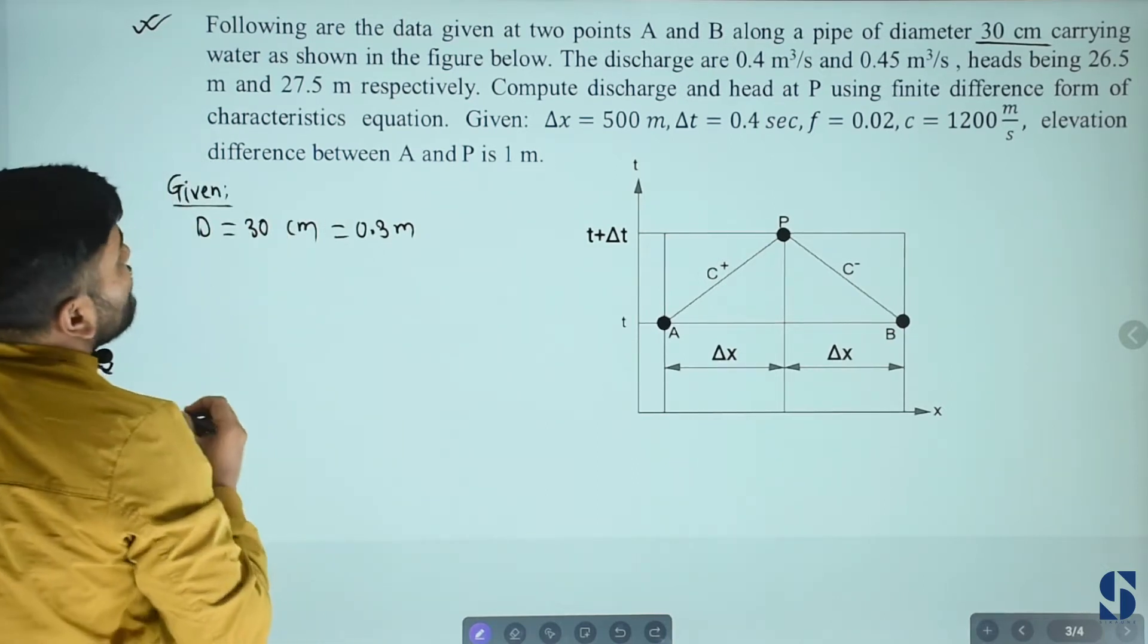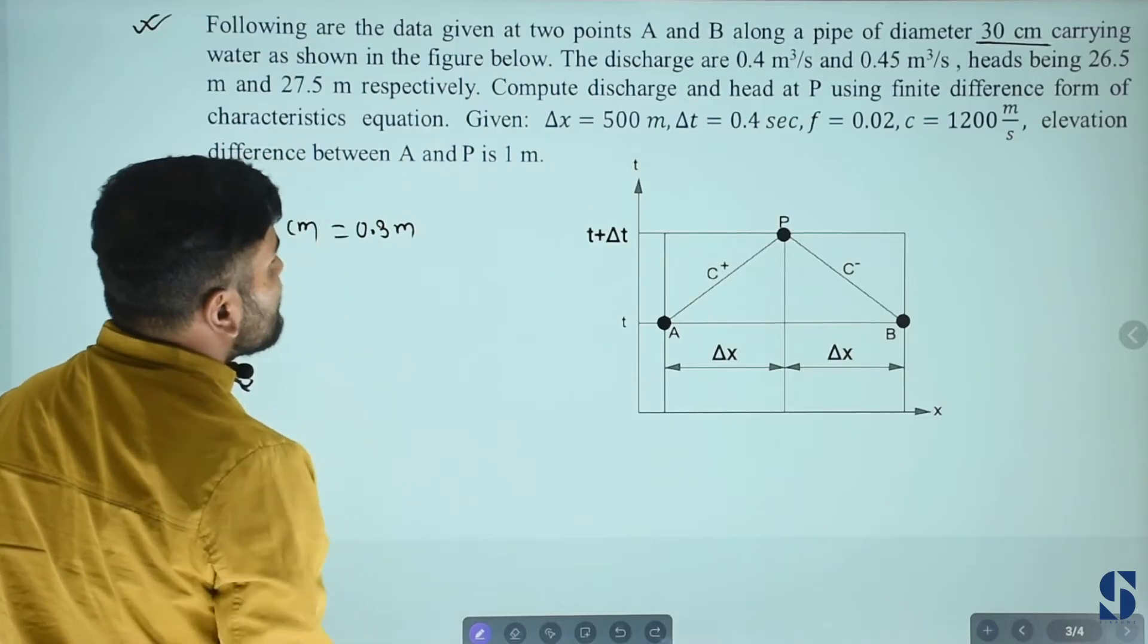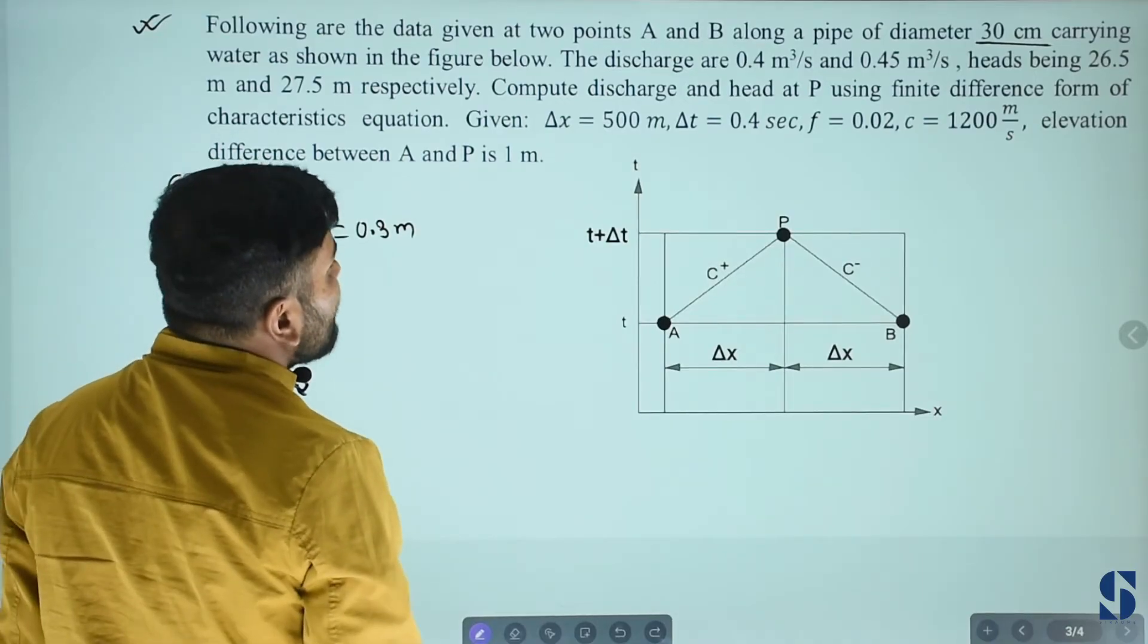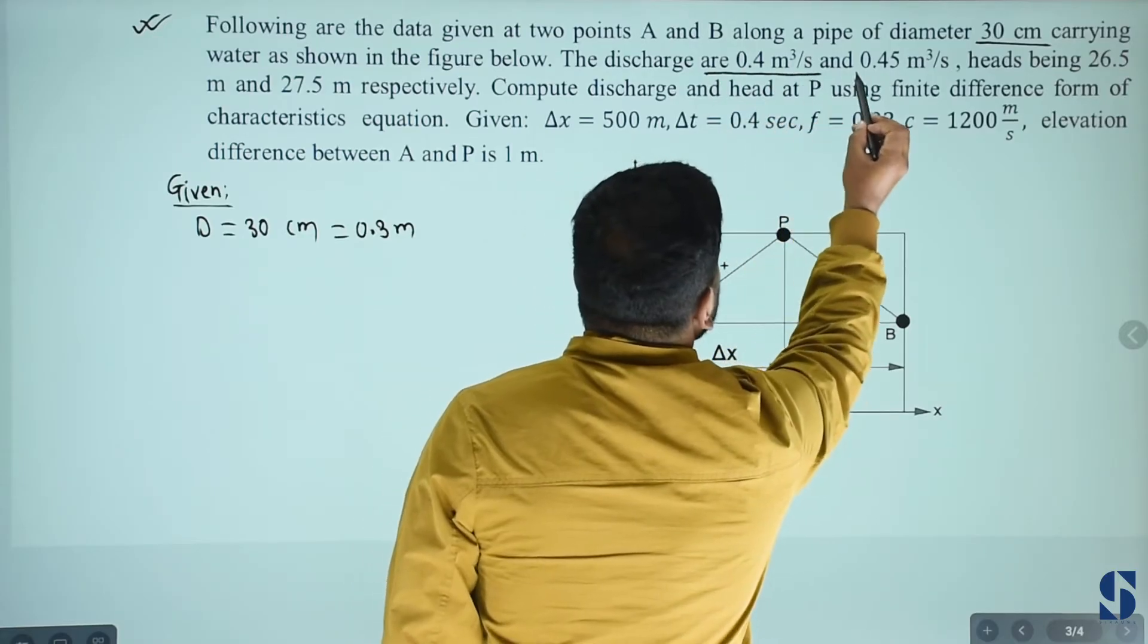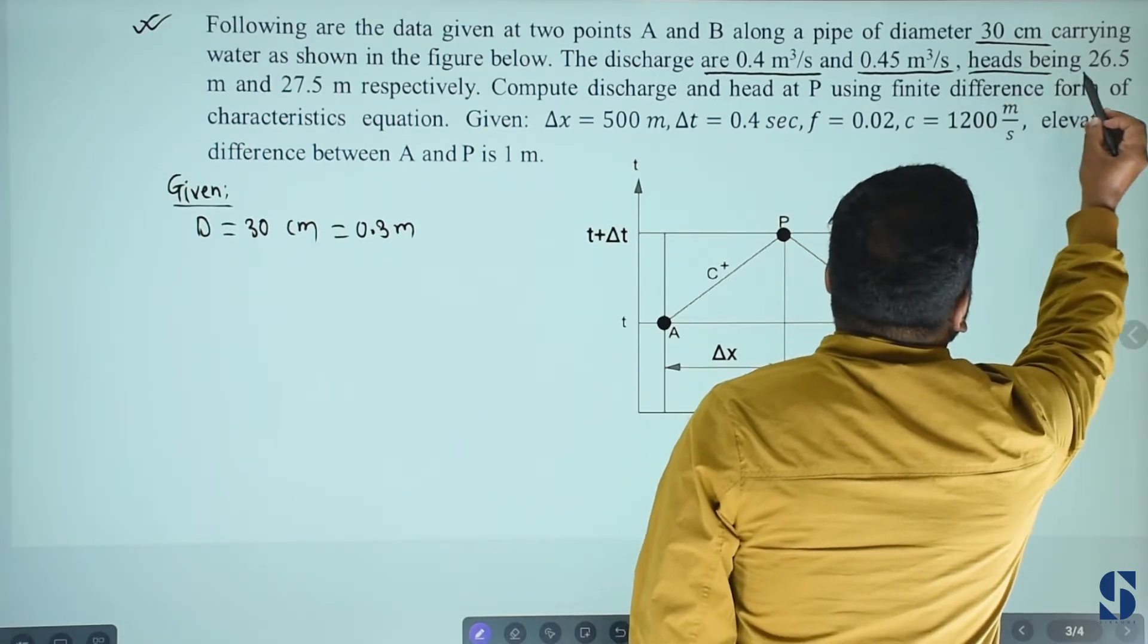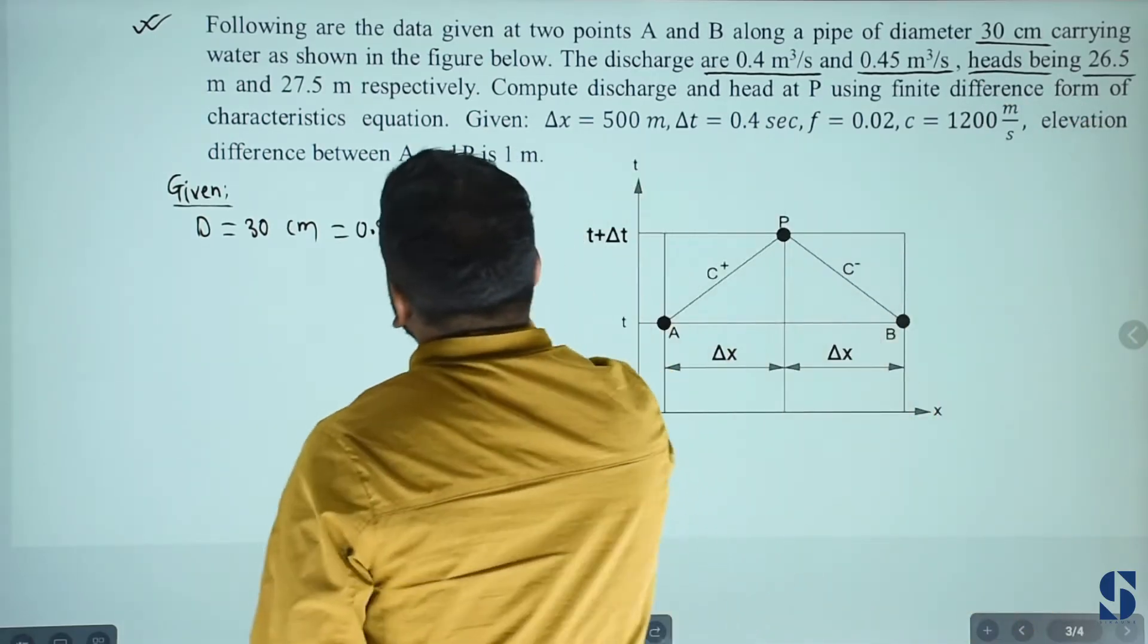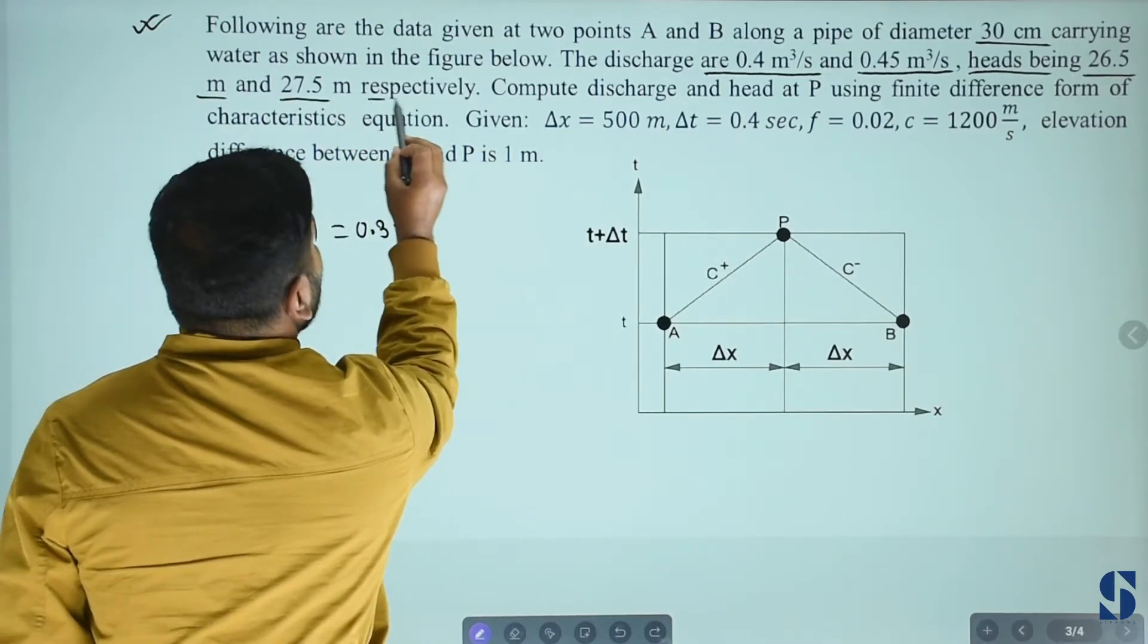Carrying water as shown in the figure below, this is the figure. The discharge are 0.4 meter cube per second and 0.45 meter cube per second, heads being 26.5 meter and 27.5 meter respectively.